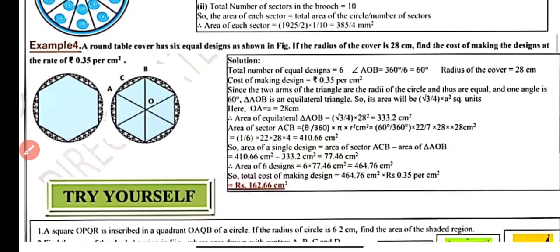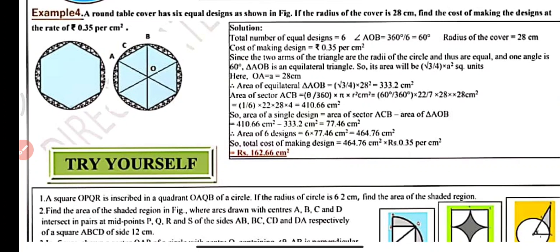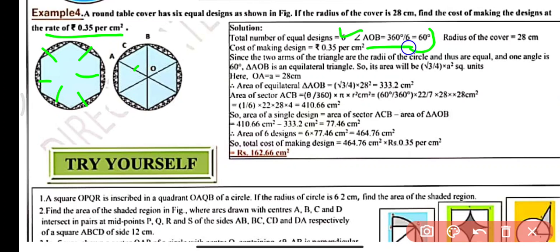Example 4: A round table cover has six equal designs. The radius of the cover is 28 cm. Find the cost of making the design at the rate of ₹0.35 per cm². Angle of each sector = 360/6 = 60°. OA = OB = radius = 28 cm. Since two arms of triangle OAB are radii and the central angle is 60°, triangle OAB is equilateral.